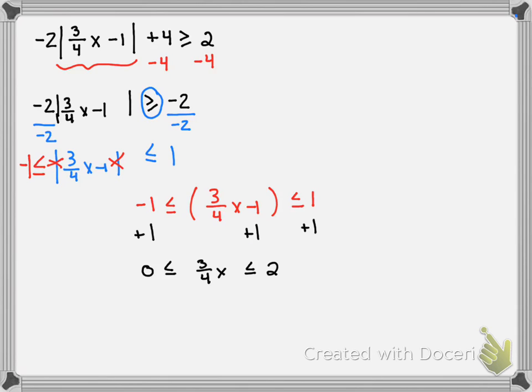Now to undo a 3 fourths, I could do this in two steps or 1. I'm going to do it in one step, multiplying everything by 4 thirds. I don't have to switch my absolute value because this is a positive value. 3 divided by 3 is 1, 4 divided by 4 is 1. So now we have x is greater than 0, greater than or equal to, and less than or equal to 8 over 3.